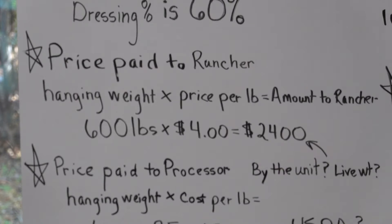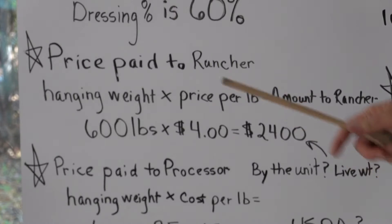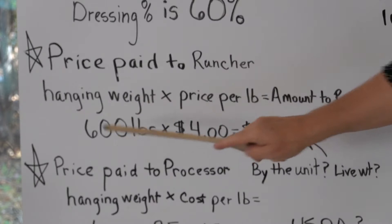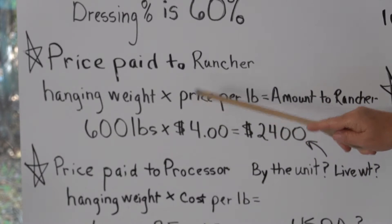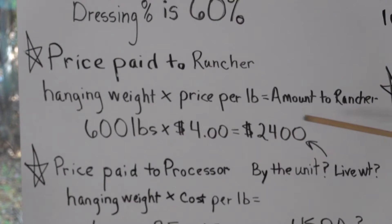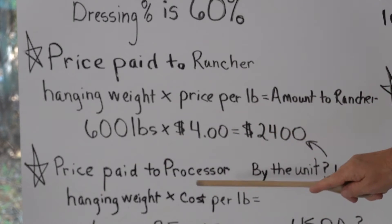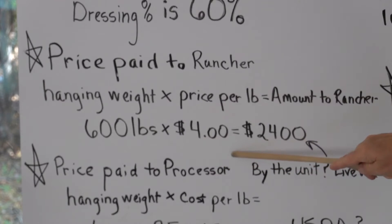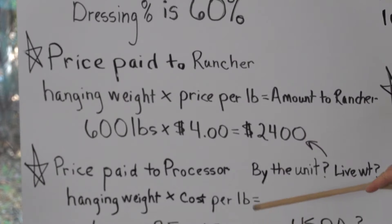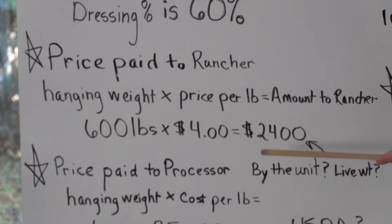Now we're going to determine the price that you're going to pay to the rancher. You take the hanging weight — which we already know is 600 pounds — and the rancher's price per pound of hanging weight, and that equals the amount paid to the rancher. This rancher is charging $4 a pound per hanging weight, and that comes out to $2,400. Keep in mind this is for a whole beef — if you're buying a half, just divide the number in half.